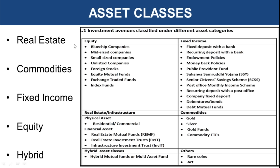Now let's come to asset classes. The first is real estate, where most people invest to earn good returns because property values increase rapidly. It could be in physical asset form — buying residential or commercial property — or in financial form such as real estate mutual funds, Real Estate Investment Trusts (REITs), or Infrastructure Investment Trusts (InvITs). These financial assets allow you to invest in real estate properties with a lesser amount of money if you feel there is growth potential.